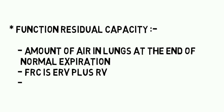The next one is functional residual capacity. Functional residual capacity is the amount of air in the lungs at the end of normal expiration. It equals expiratory reserve volume plus residual volume, about 2300 ml. At the end of normal expiration, the expiratory reserve volume and residual volume both remain in the lungs. Adding these two together gives 2300 ml — the functional residual capacity.